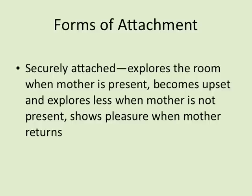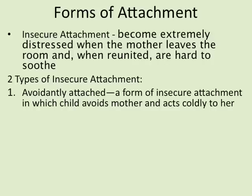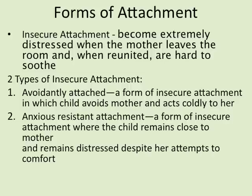There are three forms of attachment. Securely attached infants explore the room when the mother is present, become upset and explore less when she leaves, and show pleasure when she returns. Insecure attachment: the infant becomes extremely distressed when the mother leaves and is hard to soothe when reunited. Avoidant attachment is a form of insecure attachment where the child avoids the mother and acts coldly — they don't care whether she comes or goes. Anxious-resistant attachment is where the child stays close to the mother but remains distressed even despite her attempts to comfort.